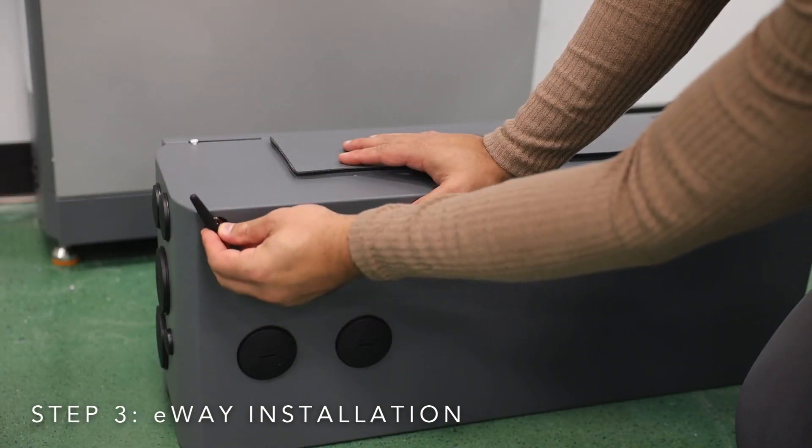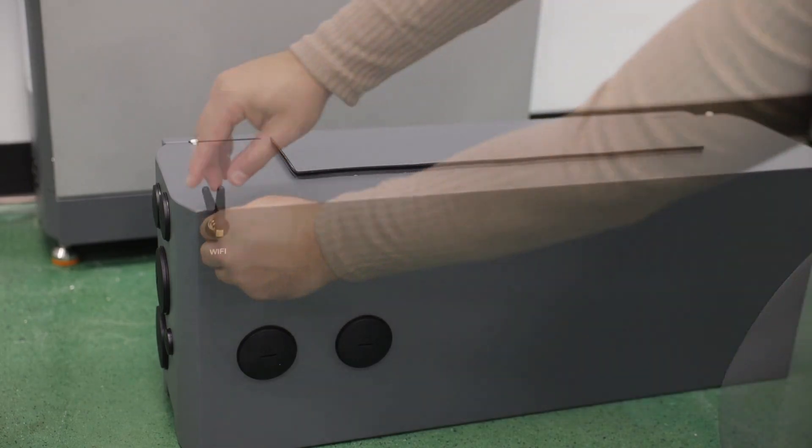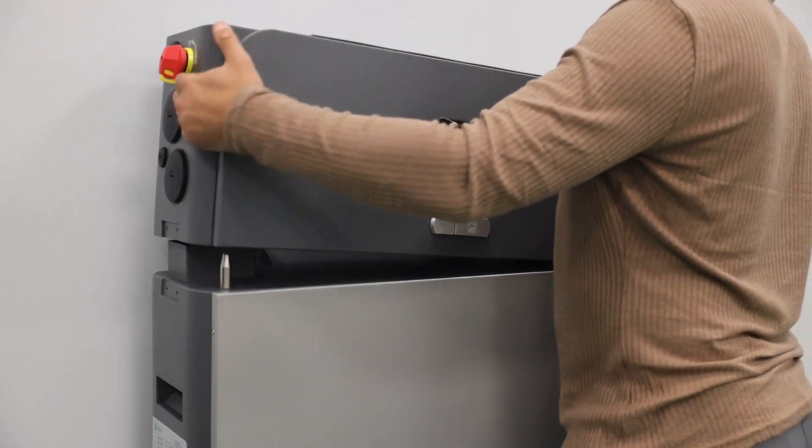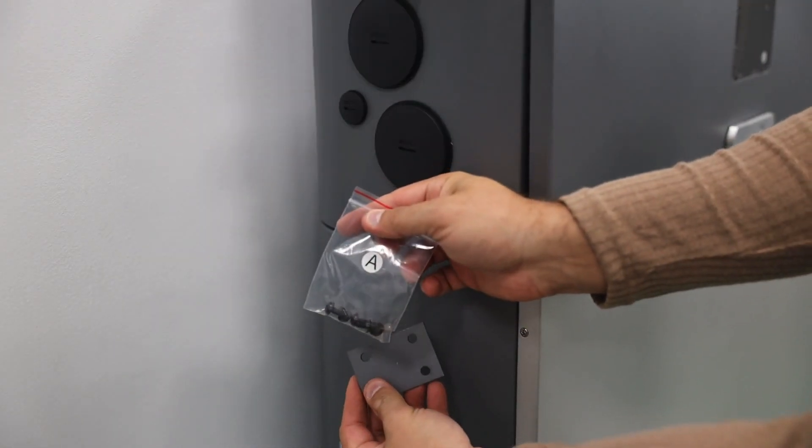Next, install the Guardian antenna to the back of the E-Way and attach the E-Way unit on top of the battery module. Secure it using the side braces.